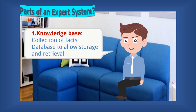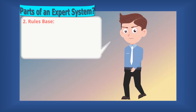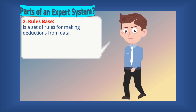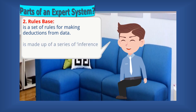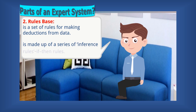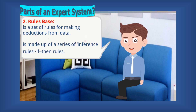Next, the rules base. It is a set of rules for making deductions from the data. This is made up of a series of inference rules represented mainly as if-then rules. These inference rules closely follow human reasoning and are used by the inference engine to draw conclusions.